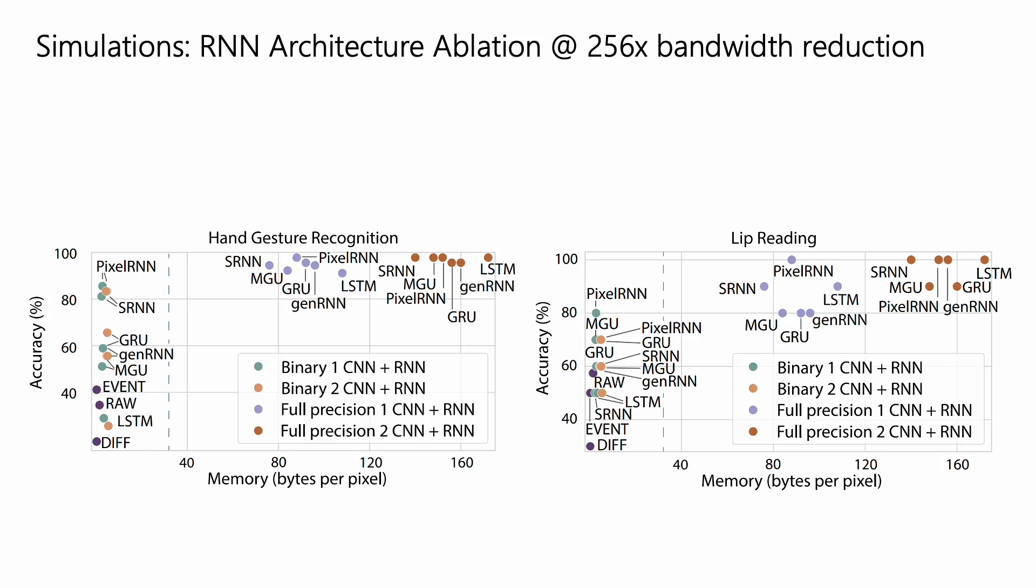At full precision, all RNNs perform well. However, at quantized settings, pixel RNN is able to maintain the performance the best. In binary settings, more complex RNNs like the LSTM exhibit more information loss through its many gates.